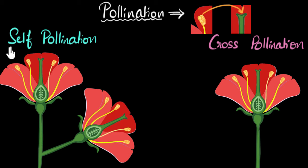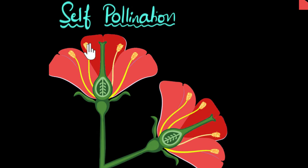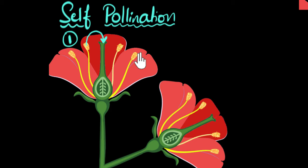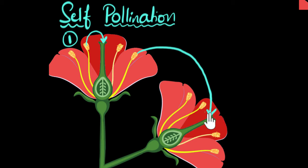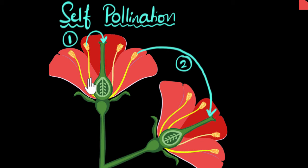Self-pollination is when pollen grains are transferred within the same plant itself. One way that can happen is if pollen grains are transferred within the same flower — from the anther to the stigma of the same flower. But even if pollen grains are transferred from the anther to the stigma of a different flower belonging to the same plant, that is also self-pollination, because the plant is still pollinating itself.